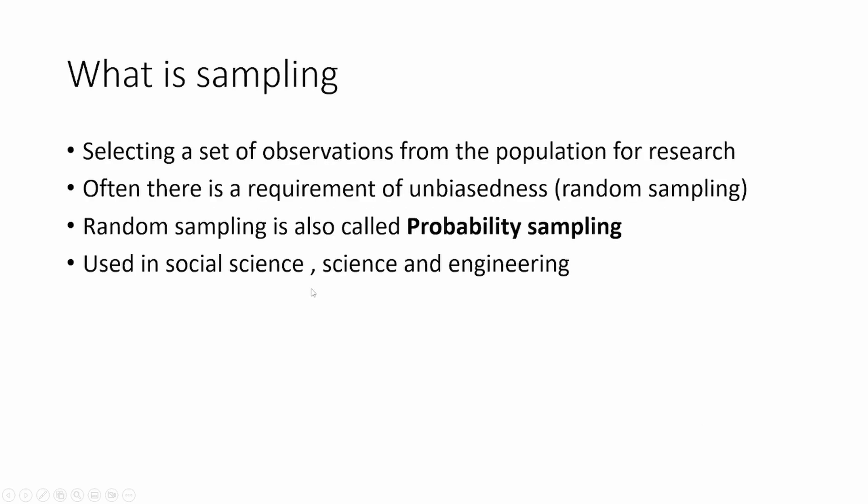I'm going to talk about what is accidental sampling, also known as convenience sampling. You may have heard about what is sampling, what is random sampling, simple random sampling, and stratified random sampling. This may be very new to you — what is accidental sampling — but it is also used in many areas: in social science, in product management, and in scientific research as well.